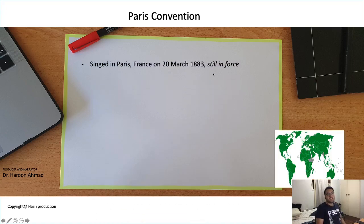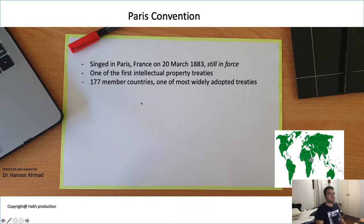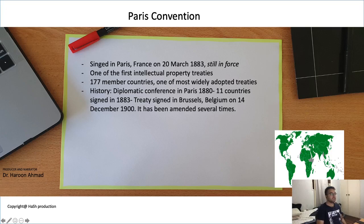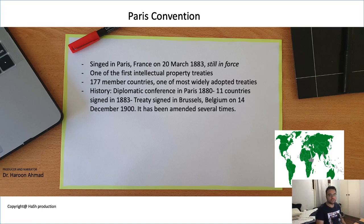The next landmark event is the Paris Convention, signed by 177 member countries and the first international intellectual property treaty. It was signed on 20 March 1883 in Paris, France, and unlike the previous three, it is still in force. It began with a diplomatic conference in France in 1880; 11 countries signed the treaty in 1883, and it came into force on 14 December 1900. Other countries joined at multiple times, and there have been several amendments. As shown on the map, the majority of world countries — shown in green — are members.